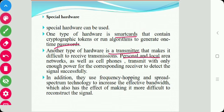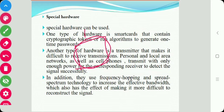Personal area networks, local area networks, and cell phones transmit with only enough power for the corresponding receiver. For that purpose, frequency hopping and spread spectrum are used. A security risk with this hardware is electromagnetic radiation generated by the device. With the right hardware, it is possible to reconstruct the source of the signal. The Department of Defense has developed a set of standards and procedures to reduce this radiation from computers.